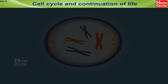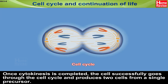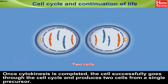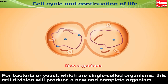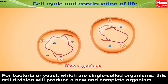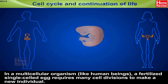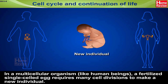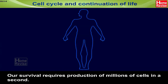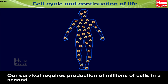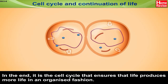Cell Cycle and Continuation of Life. Once cytokinesis is completed, the cell successfully goes through the cell cycle and produces two cells from a single precursor. For bacteria or yeast, which are single-celled organisms, cell division produces a new and complete organism. In a multicellular organism like human beings, a fertilized single-celled egg requires many cell divisions to make a new individual. Our survival requires the production of millions of cells every second, and it is the cell cycle that ensures life produces more life in an organized fashion.